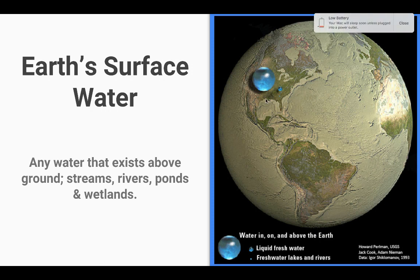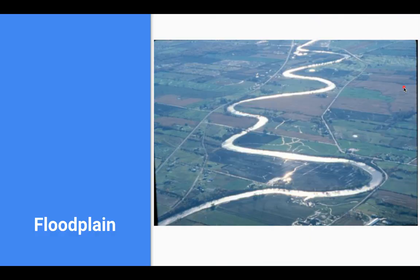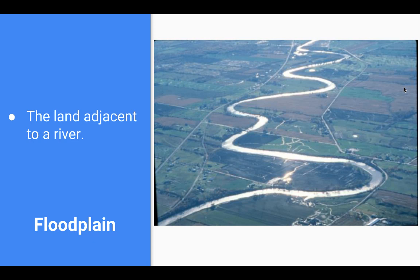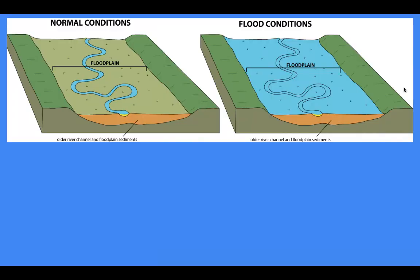Now we'll look at anything that exists above the ground — rivers, ponds, and wetlands. First is a floodplain. Ancient humans always wanted to live near a river: you had freshwater and transportation. When rivers flooded — I know it sounds bad — nutrients and sediment would be added to the soil, creating very fertile land. The Egyptians are a perfect example: they lived along the Nile's floodplain. It would flood due to heavy snowmelt or rain, but as the water receded you'd have this very fertile soil.